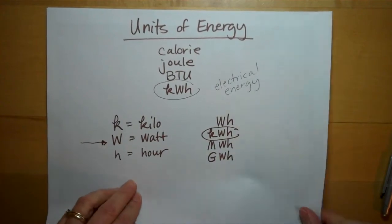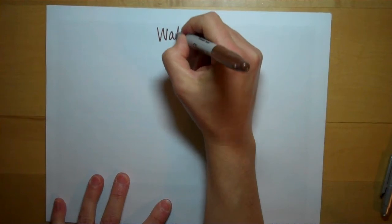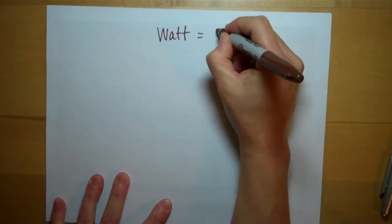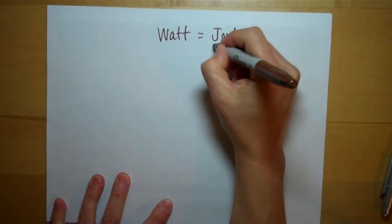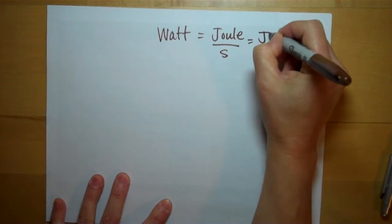Let me just briefly say about the watt. The watt's a derived unit. It's the amount of joules per second. So joules per second.